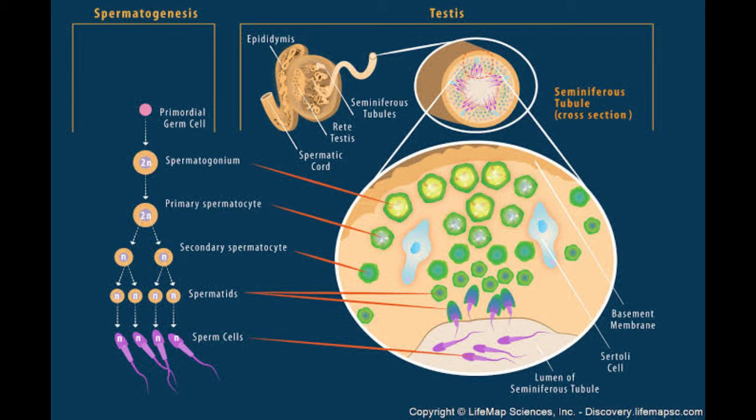Thus, during spermatogenesis, one diploid primary spermatocyte gives rise to four haploid sperm cells. The full process of spermatogenesis takes about 10 weeks in the human male. Unlike in females, the cells in the testes that develop into sperm cells are continuously produced throughout the male's reproductive years.